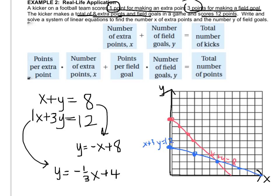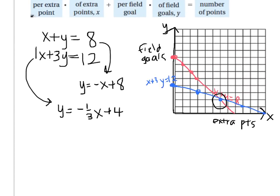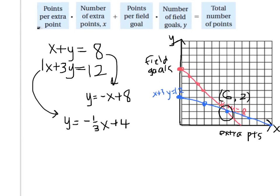And you can see right here, this is where they're intersecting, which means that that is the solution to the equations. You just have to figure out what it stands for. Remember, x stood for the number of extra points, and y stood for the number of field goals. So based on this graph, I figured out that the person made 6 extra points and 2 field goals. So let's just write that as our answer, 6 extra points, and 2 field goals.